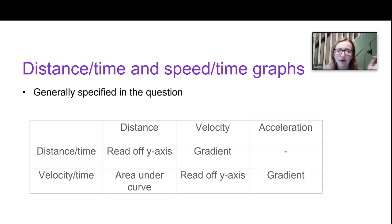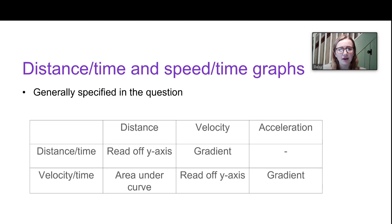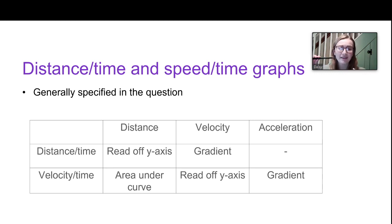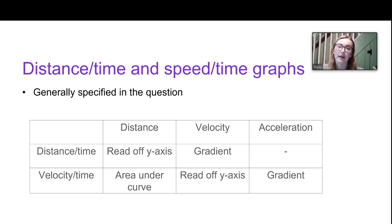Acceleration is a bit trickier to find from a distance time graph. If you've got a velocity time graph and you want to find the distance, find the area underneath that graph — you may need to split it into different shapes. If you want velocity or speed from a velocity time graph, just read off the y-axis. If you want acceleration, that's simply the gradient of the curve, since acceleration is the rate of change of velocity with respect to time.